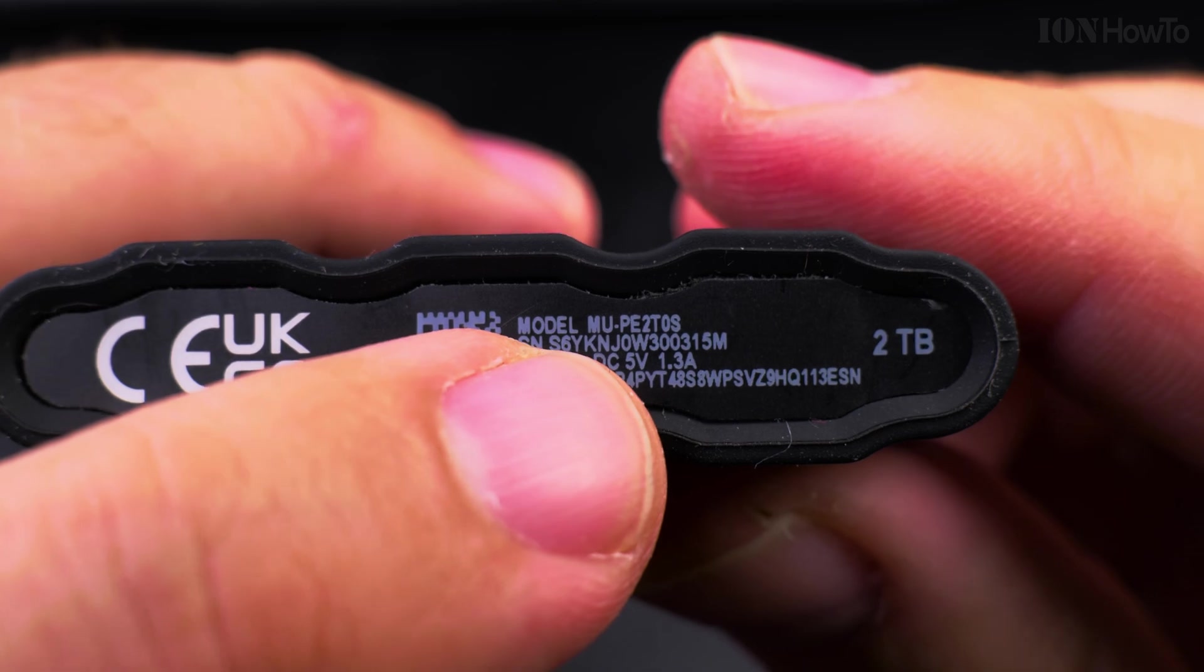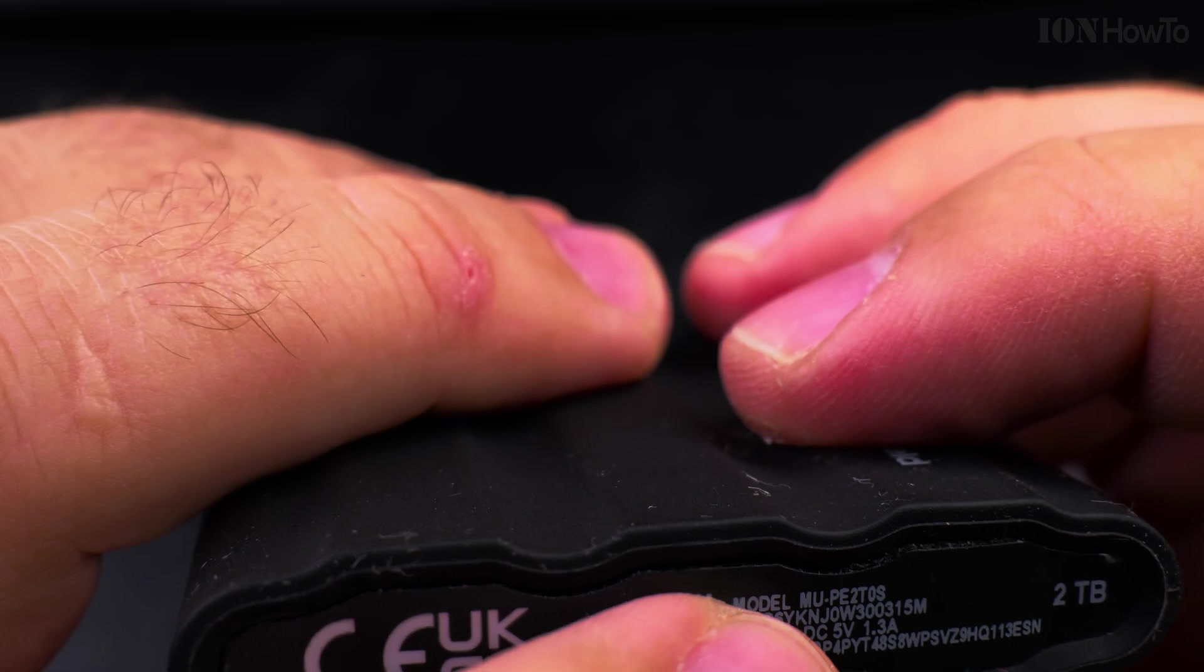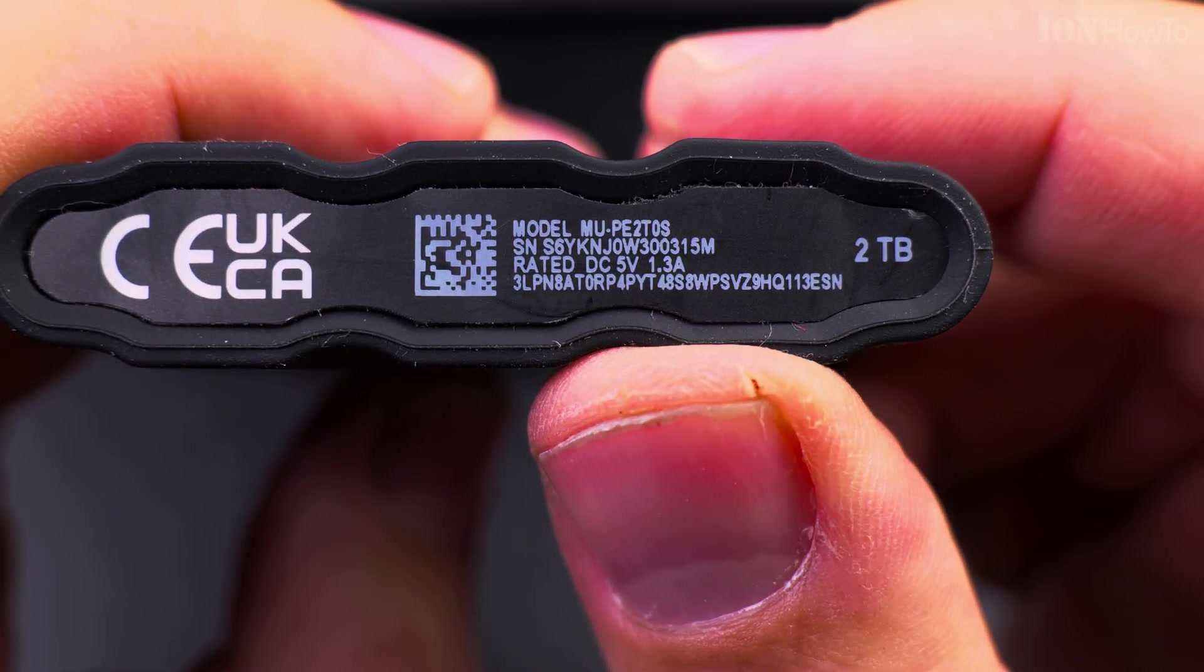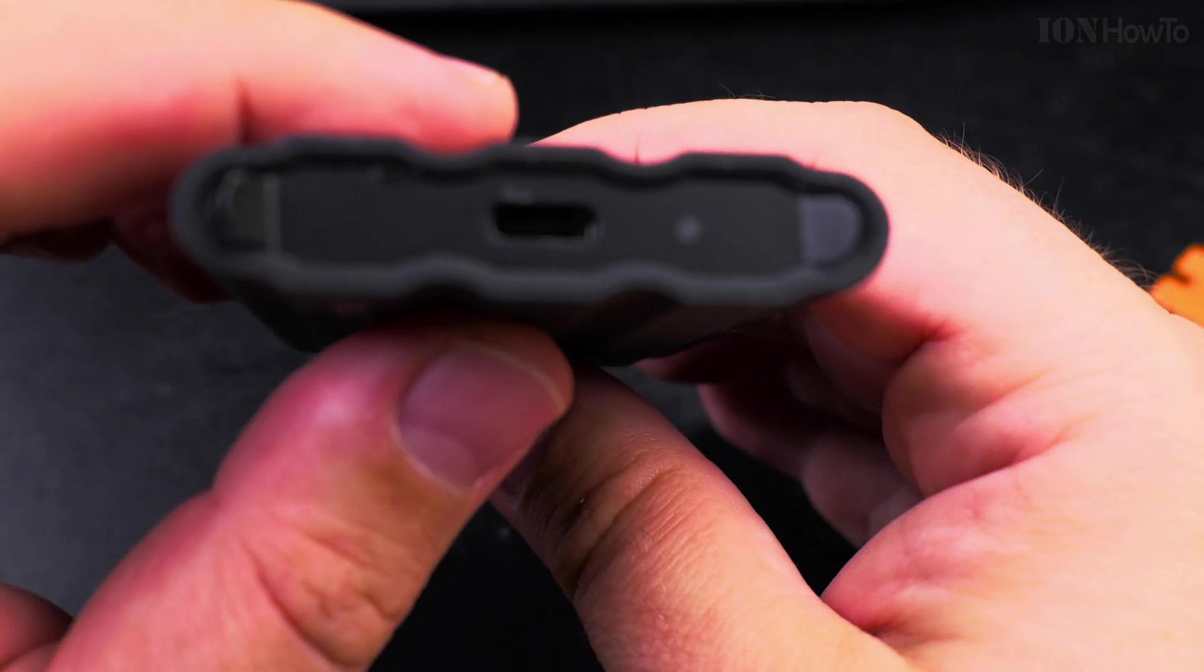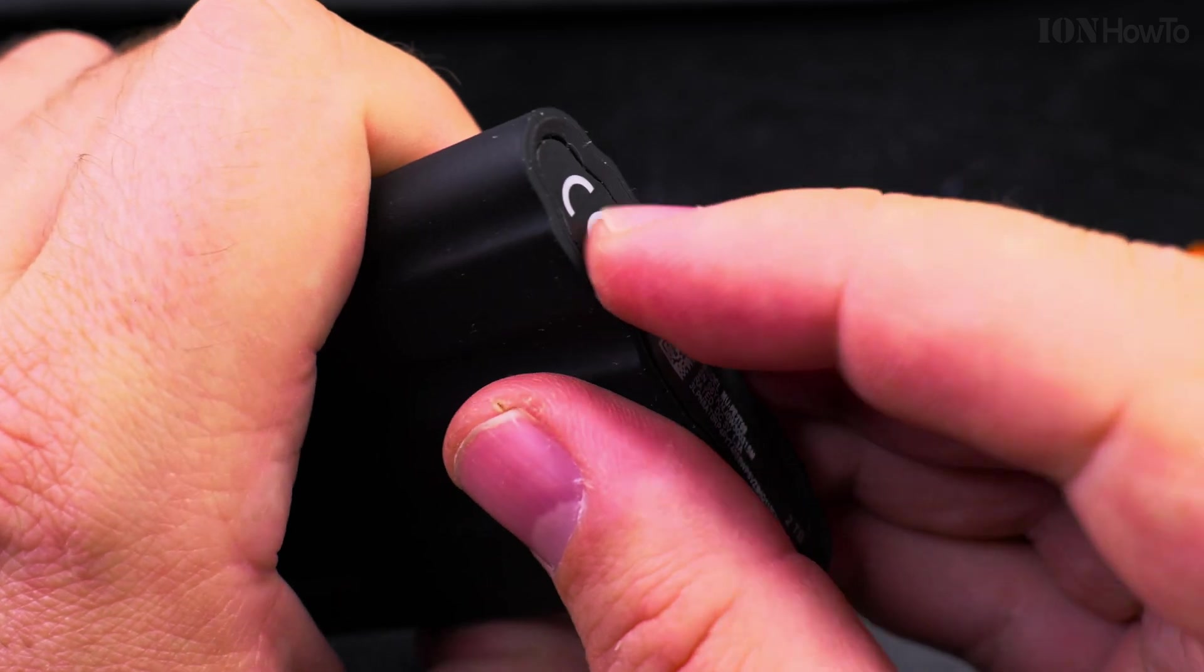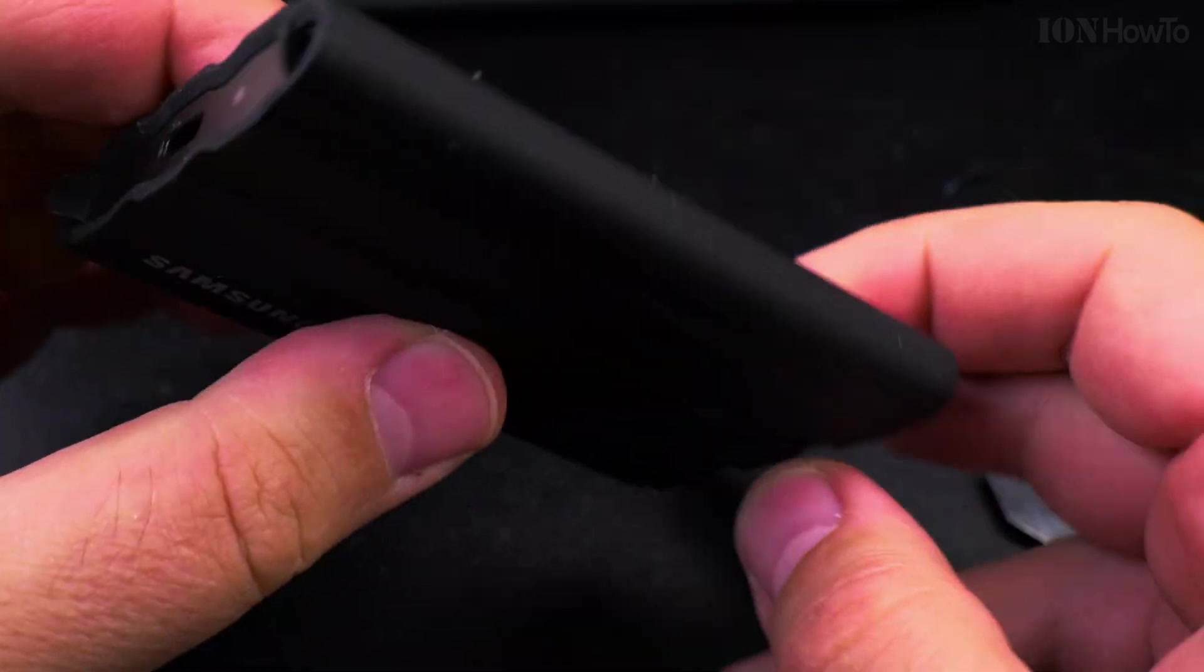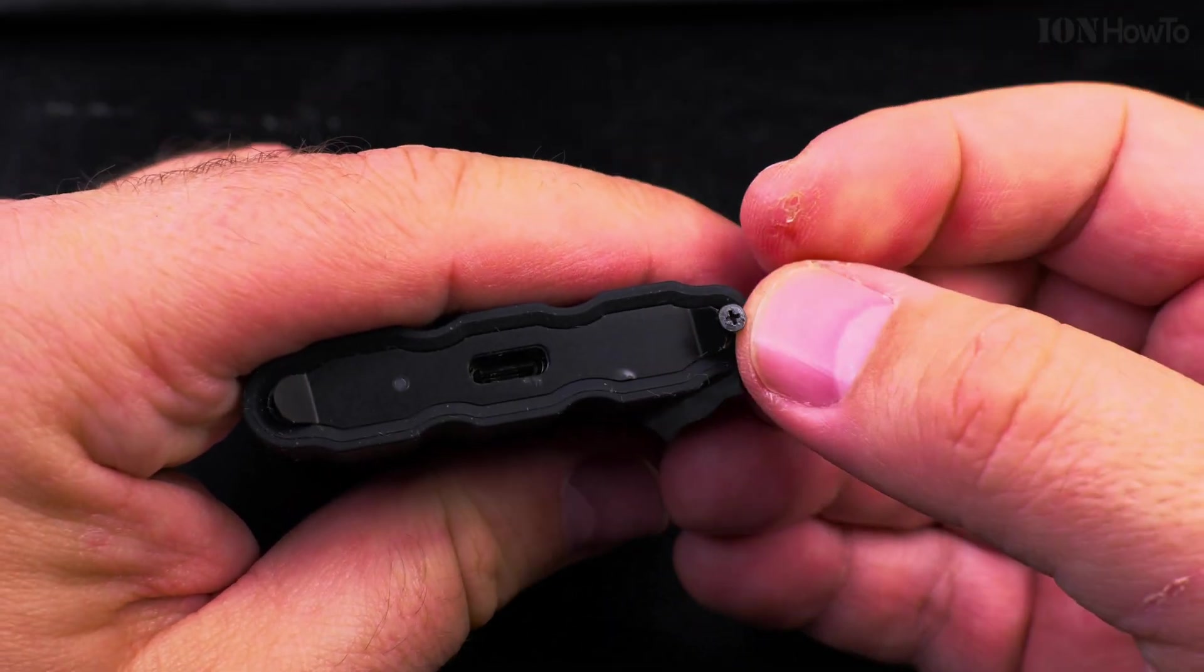So this is the model number. That's this MU-PE2T0S or 0S. I'll put the model number in the description so you see it. 2TB. And here I didn't want to open the sticker all the way. I didn't want to break it. Okay, so the screws go back in.